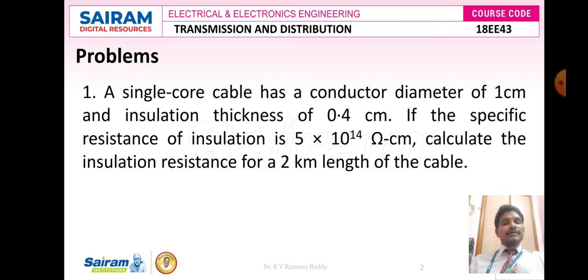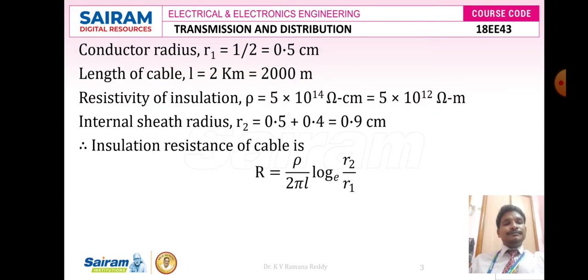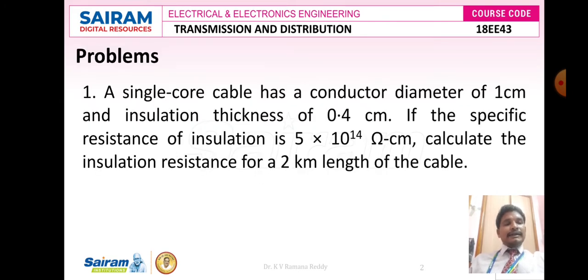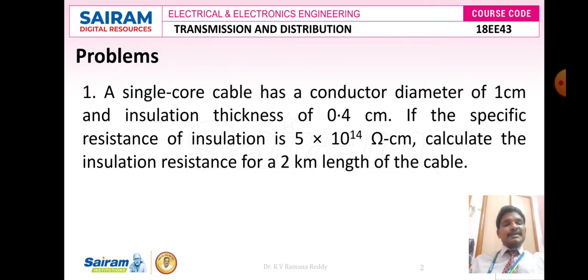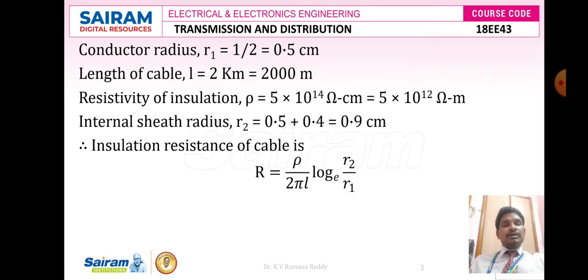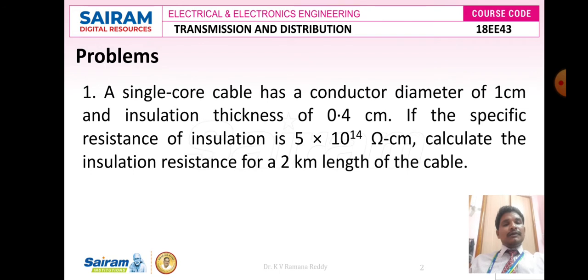In this problem, the conductor diameter is given as 1 centimeter, so the radius of the conductor r1 = 1/2 = 0.5 centimeters. The length of the cable is 2 kilometers, which we convert to meters: 2 × 10^3 = 2000 meters.